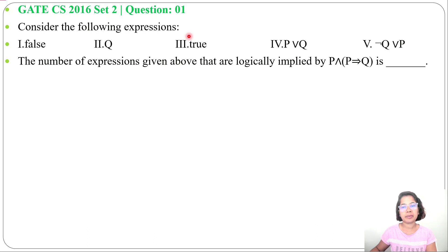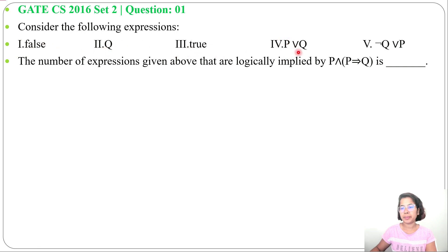Let's solve one previous question of mathematical logic. This question was asked in GATE CS 2016 Set 2, Question Number 1. Consider the following expressions: 1 is False, 2 is Q, 3 is True, 4 is P or Q, 5 is negation Q or P. The number of expressions given above that are logically implied by P and P implies Q is blank.